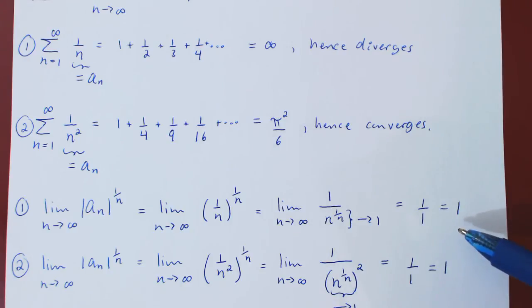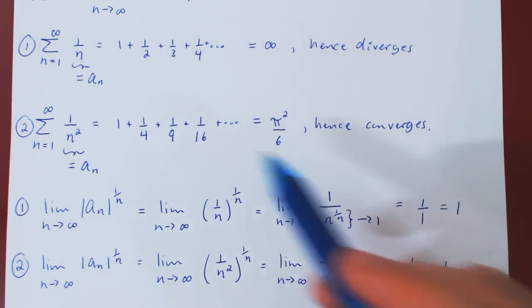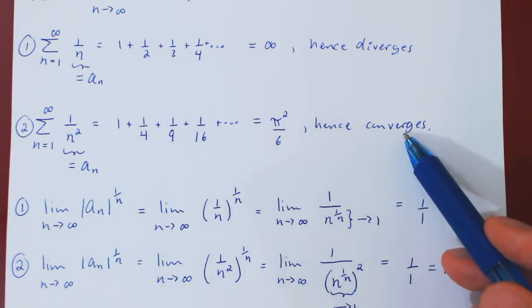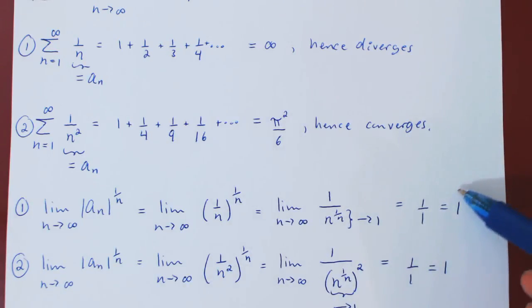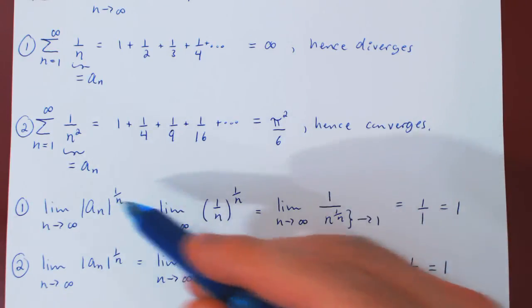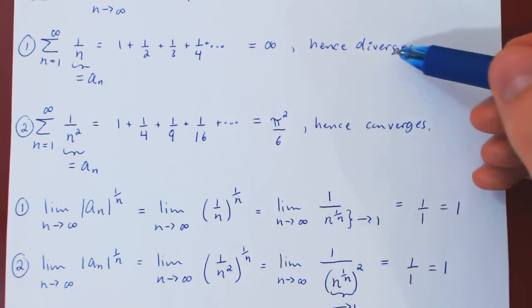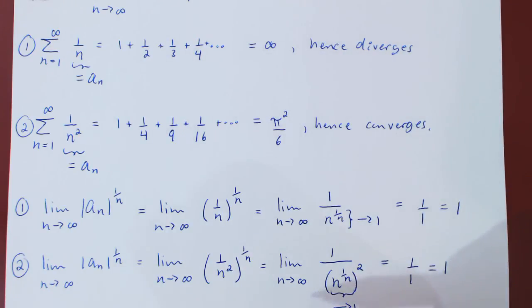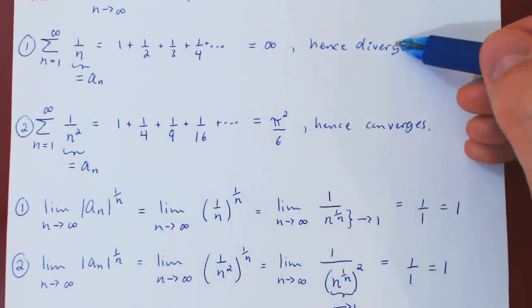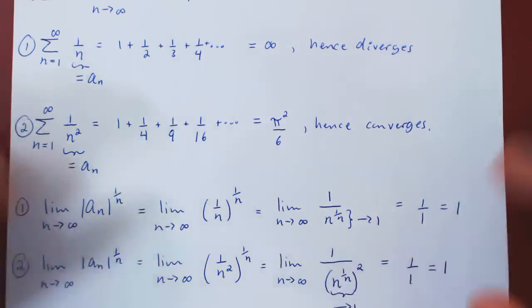And yet, the first series diverges, the second series converges, which shows that when the limit from the root test is equal to 1, we cannot conclude anything, as the series can possibly diverge or converge. And that's it.